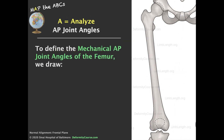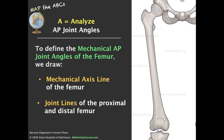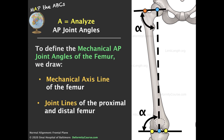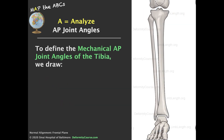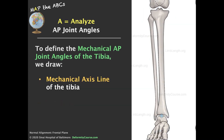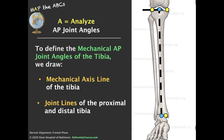To define the mechanical joint angles of the femur, we draw the mechanical axis of the femur and the joint lines of the proximal and distal femur. To define the joint angles of the tibia, we draw the mechanical axis of the tibia and the joint lines of the tibia, both proximally and distally.